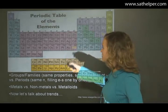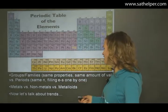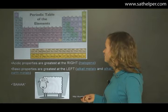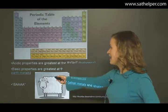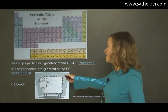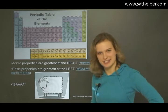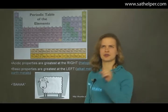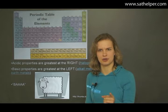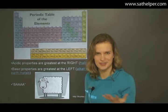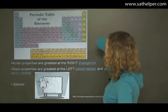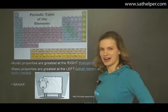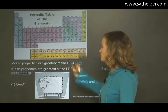So these metals — what kind of properties do they have? Let's talk about some of the trends. Acidic properties are the greatest at the right of the periodic table. So do the metals or the non-metals have the most acidic properties? The non-metals. Acidic properties are greatest to the right, so the non-metal elements have the greatest acidic properties.